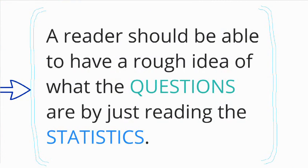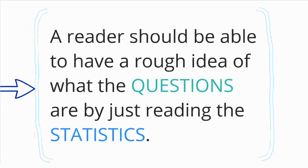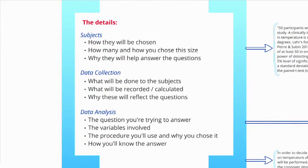Here's a general rule of thumb: a person reading your writing about statistics should have a rough idea of what the questions are just by reading the statistics section. That's for a research proposal. For a written article it's a little trickier depending on the rules for the journal, but in a research proposal a person should be able to read just the statistics section and tell what questions you are trying to answer.